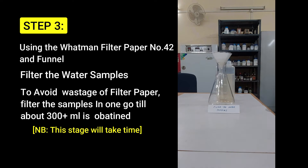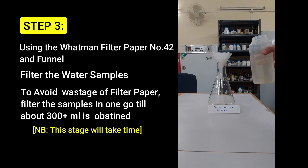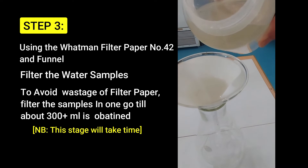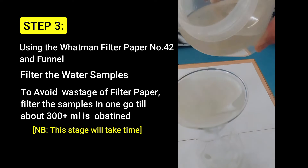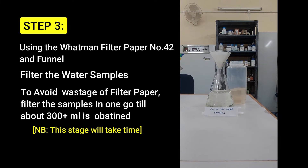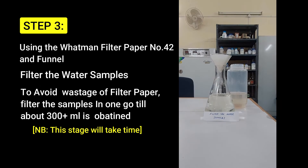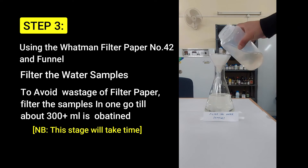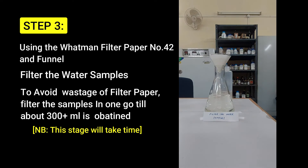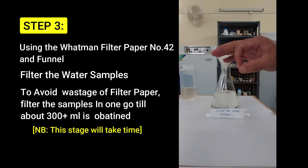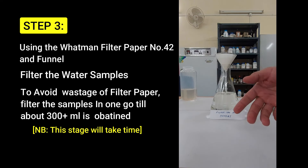The next step: using Whatman filter paper number 42 and a funnel, filter the water samples for which you want to determine the total dissolved solids content. To avoid wastage of filter paper, filter the samples in one go until you obtain about 300 ml of filtered sample. This stage will take time, so be patient.